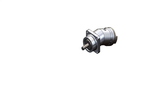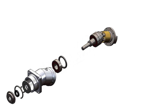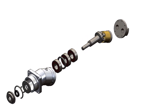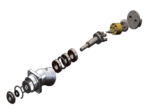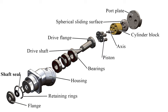In a bent axis piston pump, the cylinder block turns with the shaft but at an offset angle. The piston rods are attached to the drive shaft flange by ball joints. Most bent axis piston pumps consist of a few basic components: port plate, spherical sliding surface, drive flange, drive shaft, shaft seal, retaining rings, housing, bearing, piston axis, and cylinder block.